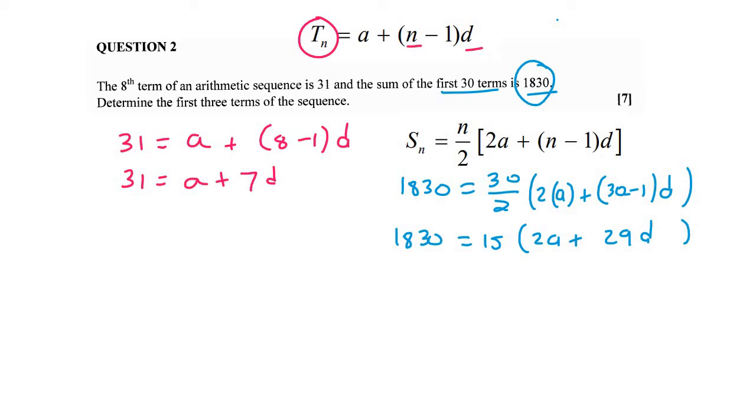And then what we can do, there's multiple ways you can do this. I'm going to multiply the 15 in. So that becomes 30A plus 435D. There we go.